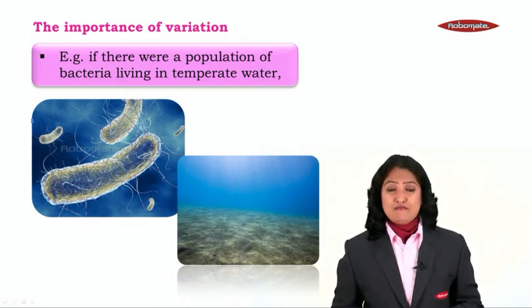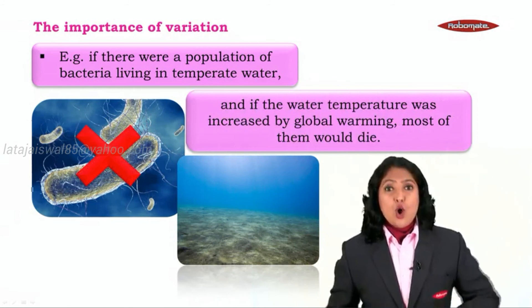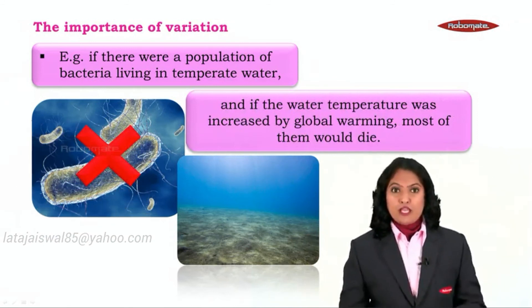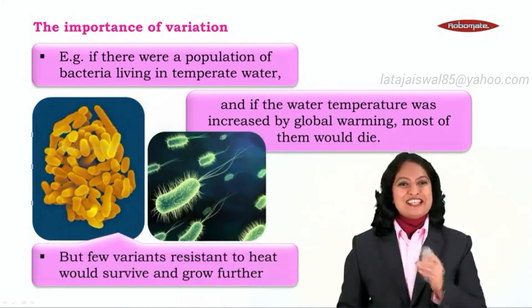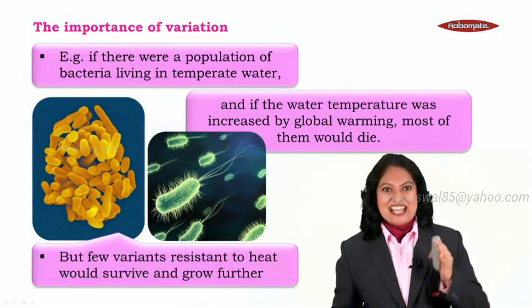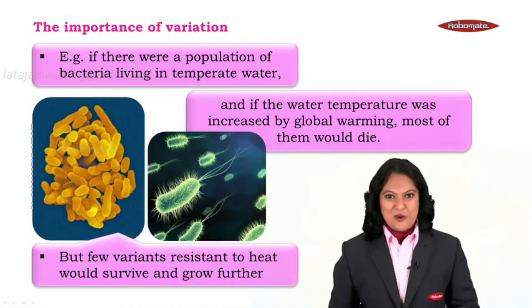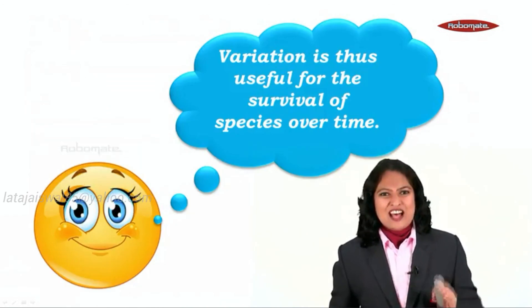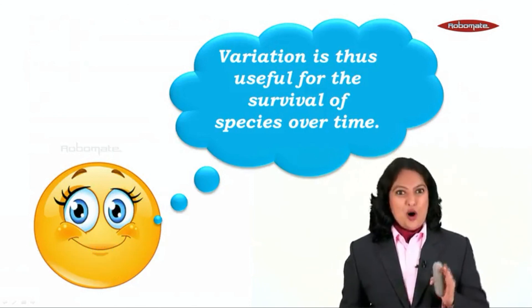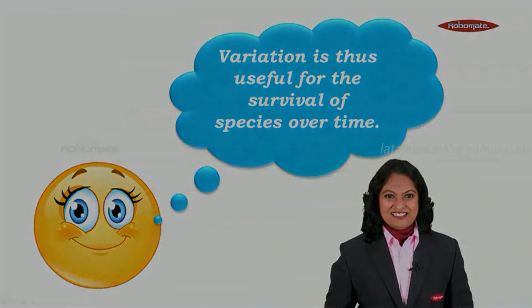Another example: if there were a population of bacteria living in temperate waters, and if the water temperature was increased by global warming, most of them would die. But that's not the case, because today we still have few strains of bacteria resistant to heat, and this variation has helped them to survive and grow. So, we can successfully establish that variations are useful for the survival of species over a period of time. With this classic thought, we end the third module of our chapter.